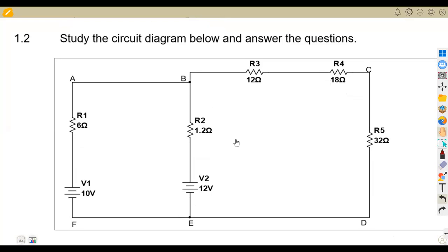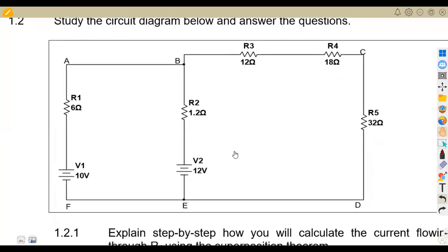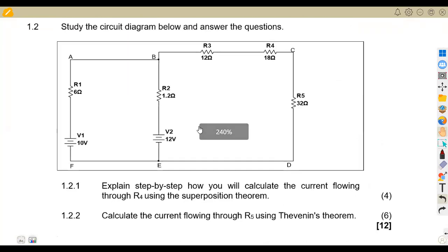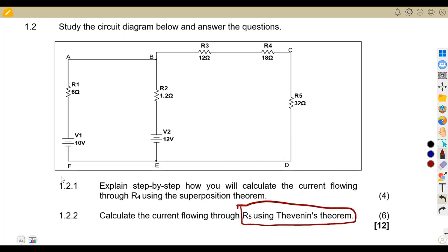The major part of the question is to study the circuit diagram below and answer the questions. That was our second diagram, and we are asked: explain how you calculate the current flowing through R4 using the superposition theorem. Then we have to calculate the current through R5 using Thevenin's theorem — that is the major part of the question. We need to talk about question 1.21: explain the steps to calculate the current flowing through R4 using superposition.